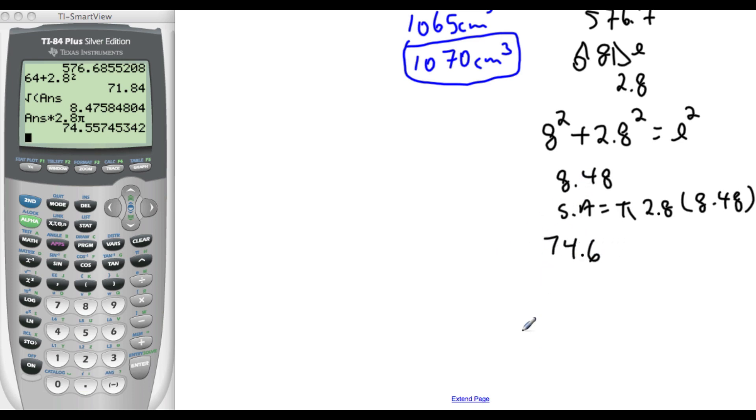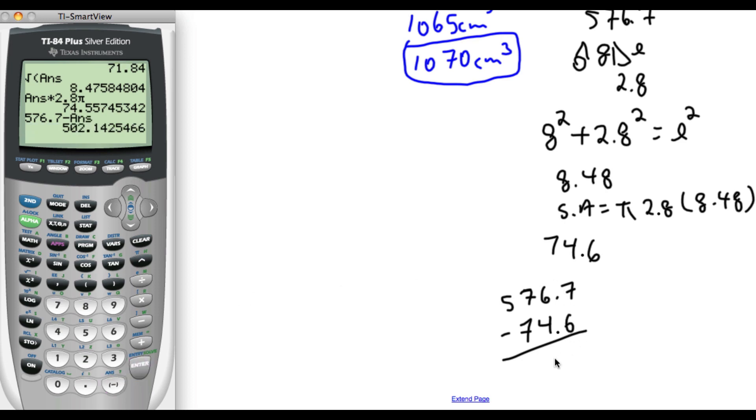So we want the whole thing, subtract 74.6. The whole thing was 576.7. So 576.7, subtract what we just found, the top, and that gives us 502 as our final answer. So 502 centimeters squared is the surface area of the traffic cone.